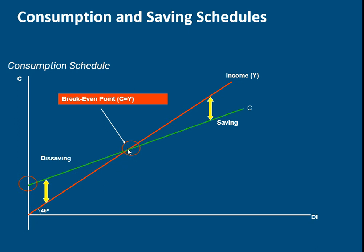Before the break-even point, your consumption is more than your income — for example, if consumption is 50 and income is 40, the difference means you are disaving. You are consuming by taking a loan from someone else, so that area represents disaving. The break-even point is where consumption and income are both equal: there is no saving, consumption equals income, and saving equals zero. The area after the break-even point represents saving, because now your income is greater than your consumption, and the difference between income and consumption is saving.